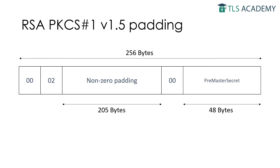The first two bytes of the premaster secret contain a 2-byte version number. The remaining bytes are chosen by the client at random. In this example, a 2048-bit key is used, therefore the padded message is 256 bytes long. The premaster secret is prepended with 208 additional bytes, always starting with the 2 bytes 00 and 02. This is essential for the Bleichenbacher attack.